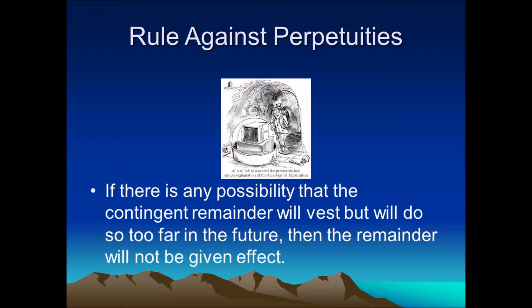This rule gives a maximum length of time in which a contingent remainder might possibly vest. If there is any possibility that the contingent remainder will vest, but it will do so too far in the future, then the remainder will not even be given effect. The maximum time limit for a person and being to be identified is: lives in being, plus 21 years. If not met, then that remainder will be void.